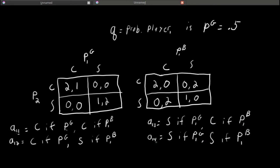So, what we see here is that player 1's actions specify what he will do for each of his possible types. So, in this case, player 1 has 4 actions.